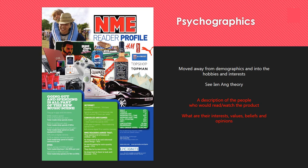Psychographics is where you use demographic data but add in things like hobbies and interests. It moves away from categorising people purely by gender — like 'all men like football, all women like soaps' — and focuses more on personal interests and values. A psychographic is essentially a description of who would read or watch a product — their interests, values, beliefs and opinions, rather than just gender and age.